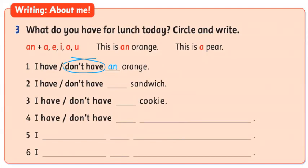Look at Part 3 — Writing about me. Now, look at number 3. What do you have for lunch today? Circle and write. Now, student, look at these letters: A, E, I, O, U. These are vowels, right? So we use 'an' before the vowels, okay? For example, look at this — this is an orange, right? You can see the letter O. O is a vowel, so we use 'an' before orange. Now, this is a pear. You can see the letter P — P is not a vowel, so we use 'a' before pear, right?